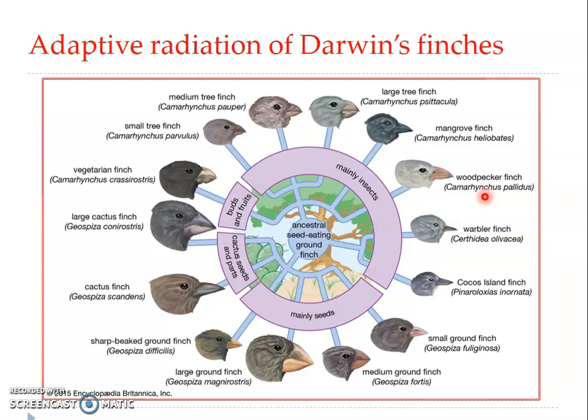Equally extraordinary is the warbler finch. It resembles in form and habit the true warbler. Its slender, warbler-like beak is adapted for picking small insects off bushes. Occasionally, like a warbler, it can capture an insect in flight.